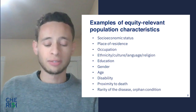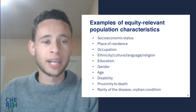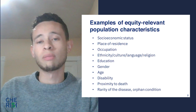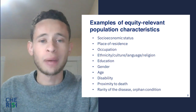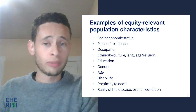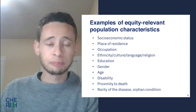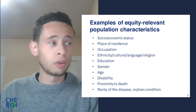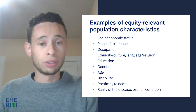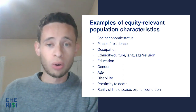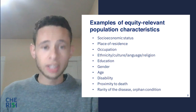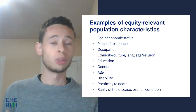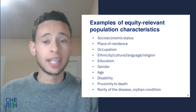In the case of DCEA, we need to define the population subgroups that will be the focus of concern about equity. Examples of such equity-relevant population characteristics include socioeconomic status, geographical location, ethnicity, gender, age, or specific health states like disability, as well as other criteria like the rarity of disease, proximity to death, or orphan condition. Other relevant subgroups can be examined depending on the research question, the decision-making context, and data availability.